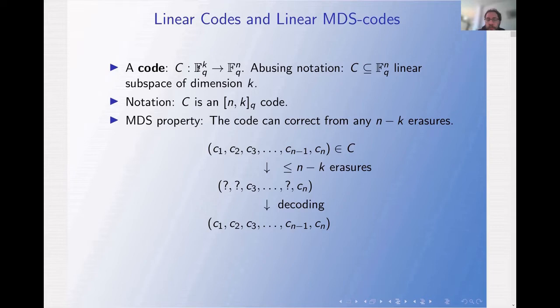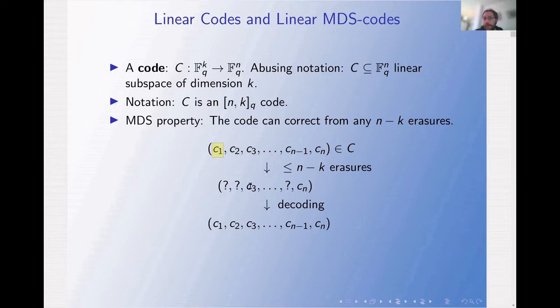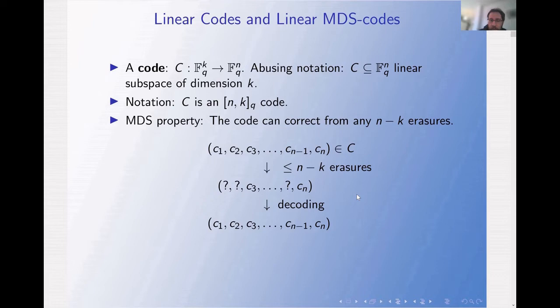In Distributed Storage Systems, we always use MDS codes. MDS codes have the property that the code can correct from any N minus K erasures. An erasure is replacing a symbol by a question mark. The property states that if someone takes a code word and performs up to N minus K erasures anywhere, then we can recover the original code word. This decoding process is done efficiently in linear MDS codes.